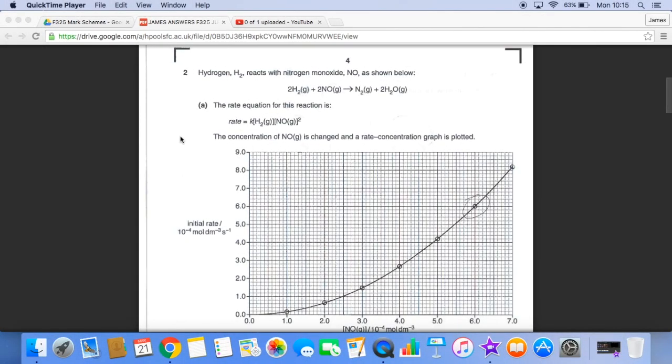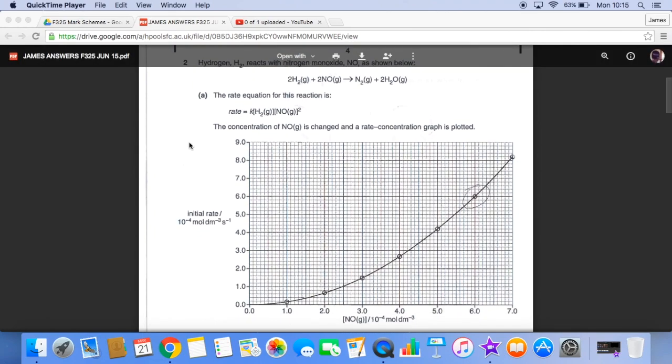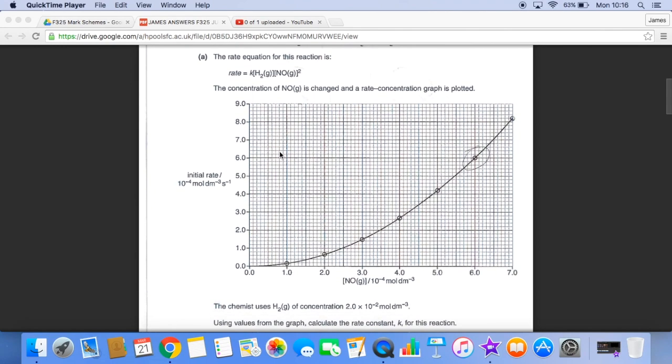So part A, calculate the value for K using the graph. So essentially we need to know the rate, we need to know the concentration of hydrogen, and we need to know the concentration of NO. So if we look at the question, we're given the concentration of hydrogen, so we've got that.